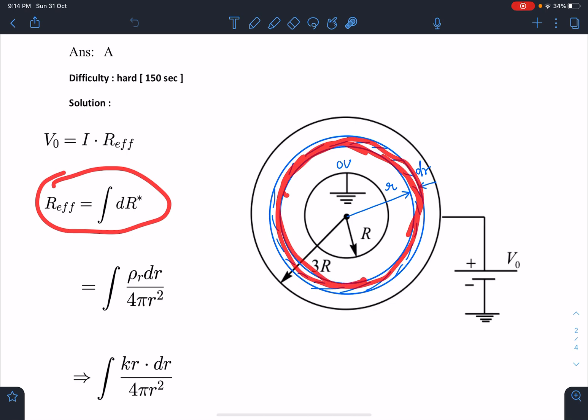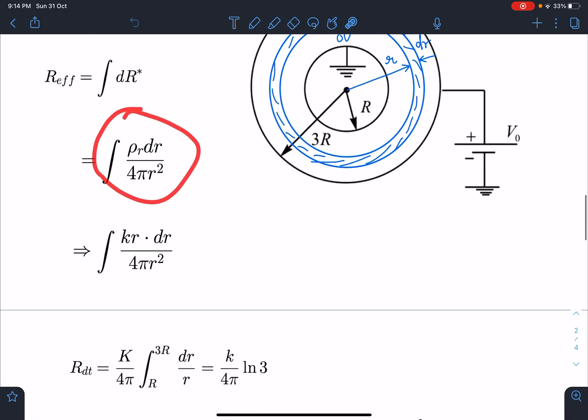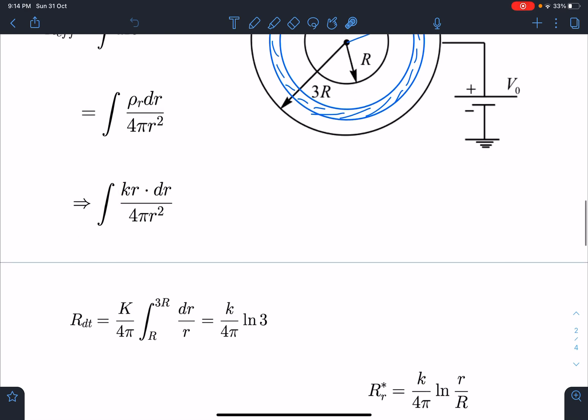Small resistance will become ρ(r) times thickness dr divided by cross-section area through which current is passing, which is 4πr². So this is how I have written. I can substitute the value of ρ_r, simplify this, and I'm going to get the resistance.